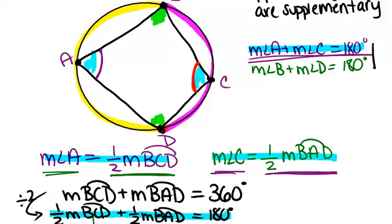So opposite angles of a quadrilateral that's inscribed in a circle will always equal 180 degrees. They'll always be supplementary. And this is due to inscribed angles and the fact that a full circle is 360 degrees.